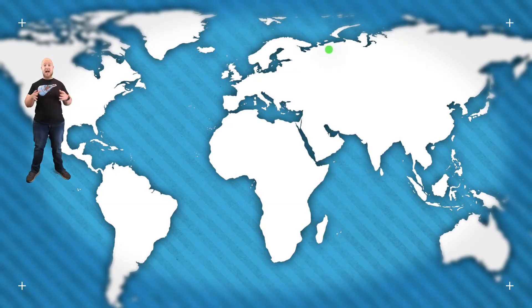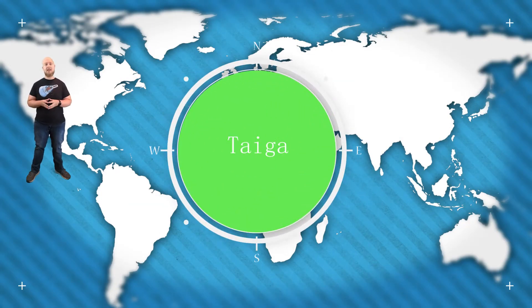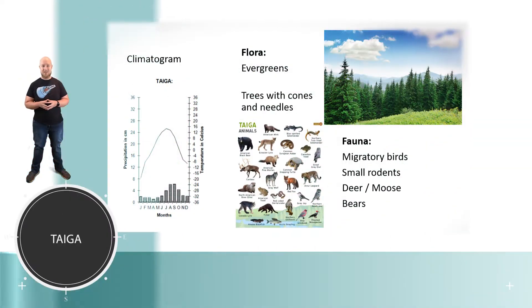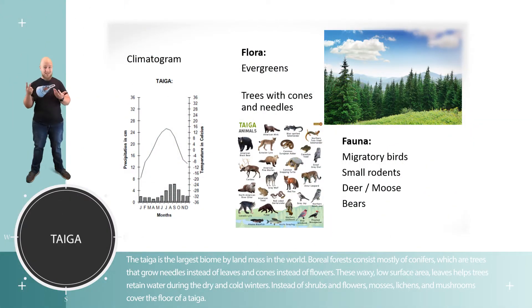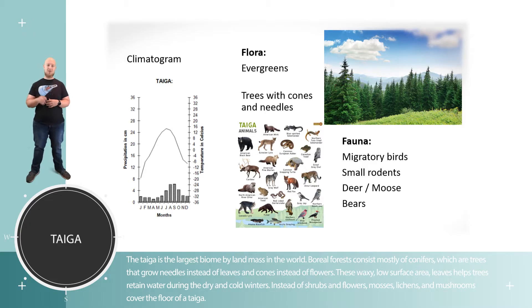The taiga, or the boreal forest, is the largest biome on Earth by how much area it actually takes up. The climate in the taiga realistically has maybe two seasons: the inhospitably cold and the slightly more hospitable cold. It does get above freezing during the summer for a little bit, but I think of the taiga as having two seasons — frozen and not as frozen.